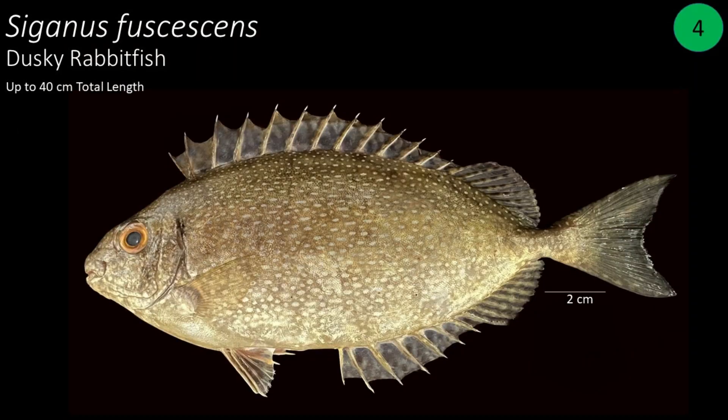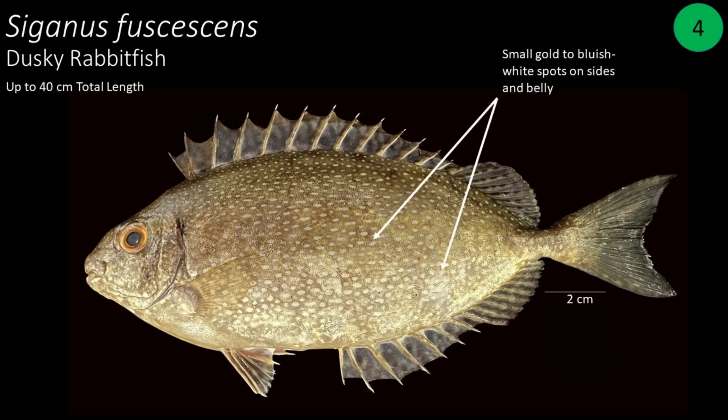Number 4: Siganus fuscescens, also called dusky rabbitfish. They can grow up to 40 centimeters in total length. The upper body is gray to bluish gray or brownish yellow, becoming paler towards the belly. There are small gold to bluish white spots on the sides and belly, and the caudal fin is slightly lunate.